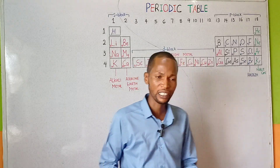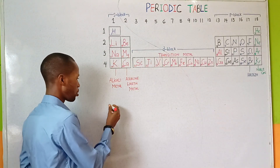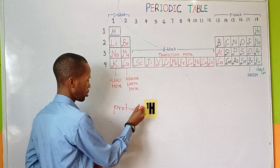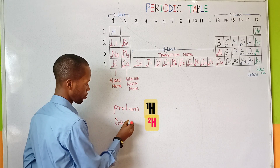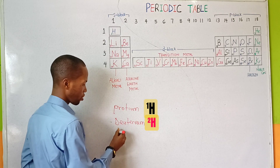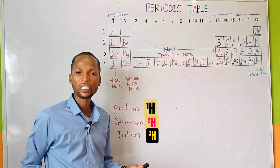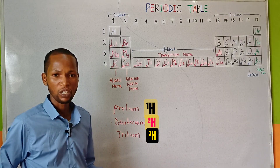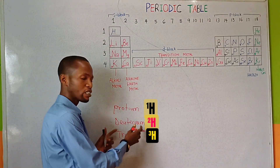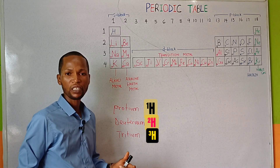It was also identified that the isotopes of hydrogen — that is, protium, deuterium, and tritium — were arranged in different positions, not considering that these isotopes of the elements have the same atomic number.